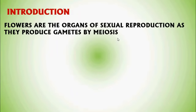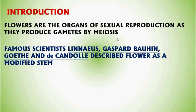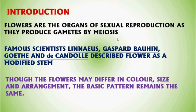Flowers are the organs of sexual reproduction as they produce gametes by meiosis. Famous scientists Linnaeus, Gaspard Bahin, Cote, and Condell described the flower as a modified stem. Though flowers may differ in color, size and arrangement, the basic pattern remains the same.